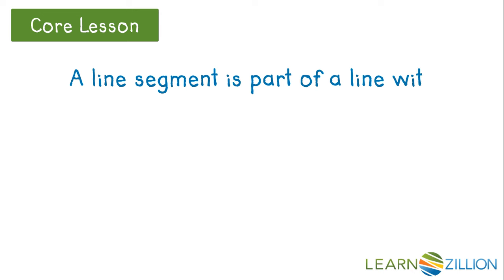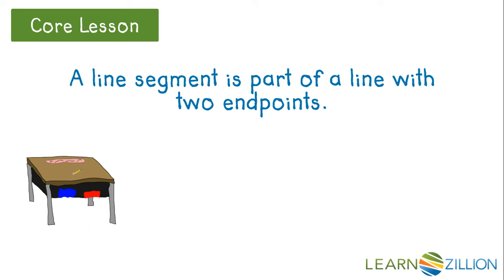A line segment is part of a line with two endpoints. Remember your desk. We have four line segments on top of your desk. Look at this line segment here. It has two points, also called endpoints because that's where the line ends. X and Y. So we could call this line segment XY or call and label it YX. It's the same line segment. Doesn't matter what order.